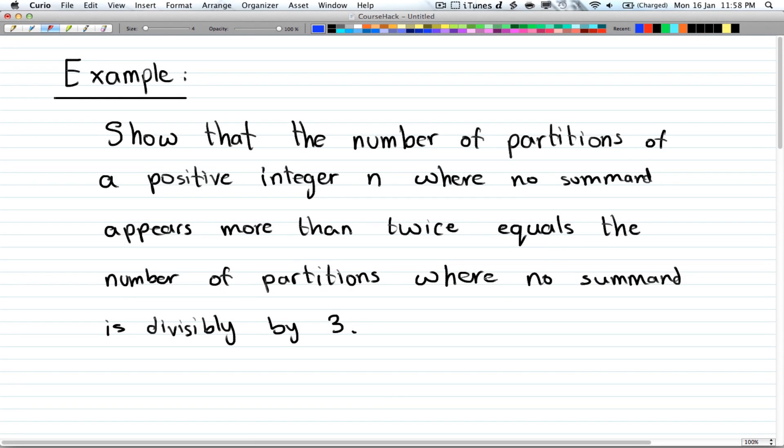So here we have an example. You have to show that the number of partitions of a positive integer n where no summand appears more than twice equals the number of partitions where no summand is divisible by 3.